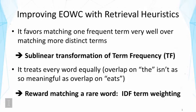To address the second problem, we can put more weight on rare terms. That is, we can reward matching a rare word. And this heuristic is called IDF term weighting in text retrieval. IDF stands for inverse document frequency. So now we're going to talk about the two heuristics in more detail.